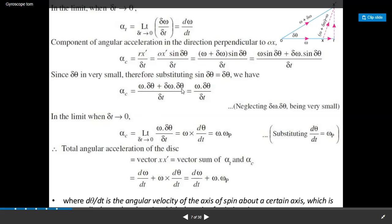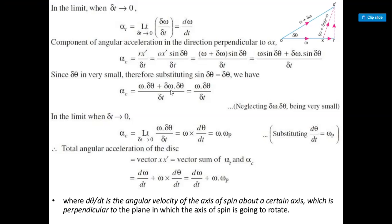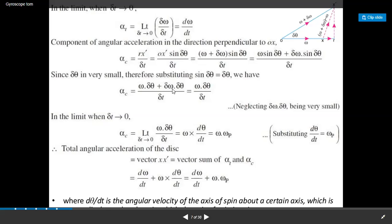Since delta omega and delta theta are both very small values, their product delta omega × delta theta can be neglected with respect to omega × delta theta. So we get the value omega × delta theta / delta t. Taking the limit as delta t tends to 0, we get alpha_c = omega × (d theta / dt), where d theta / dt is omega_p, the angular velocity of precession.